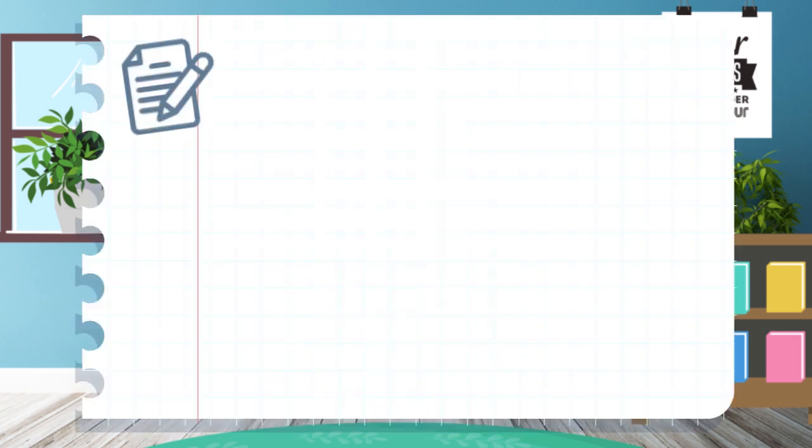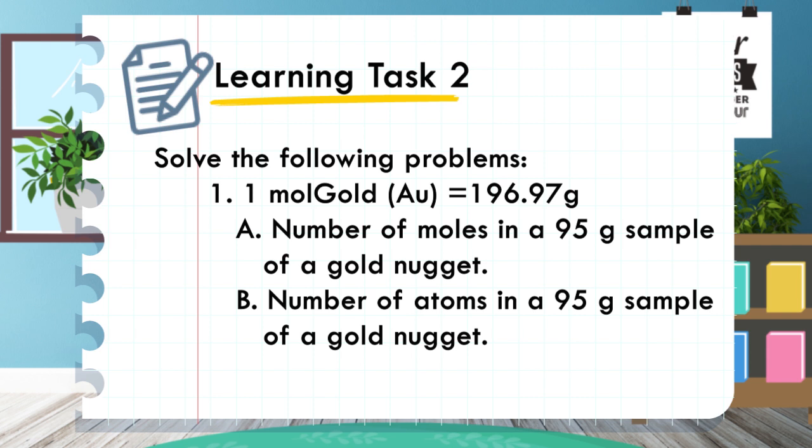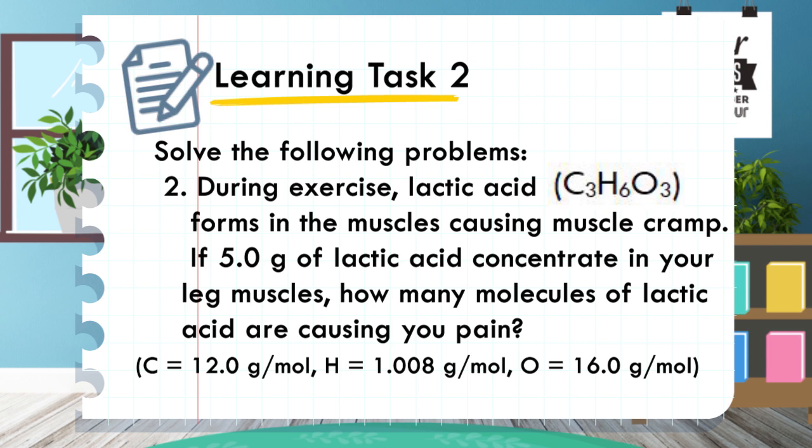It's time to check your knowledge. Solve the following questions. Number 1: if 1 mole of gold is equivalent to 196.97 grams, calculate (A) the number of moles in a 95-gram sample of a gold nugget, and (B) the number of atoms in a 95-gram sample of a gold nugget. Number 2: during exercise, lactic acid or CH₃H₆O₃ forms in the muscle causing muscle cramp. If 5 grams of lactic acid concentrate in your leg muscles, how many molecules of lactic acid are causing your pain? Carbon is 12.0 grams per mole, hydrogen is 1.008 grams per mole, and oxygen is 16 grams per mole.